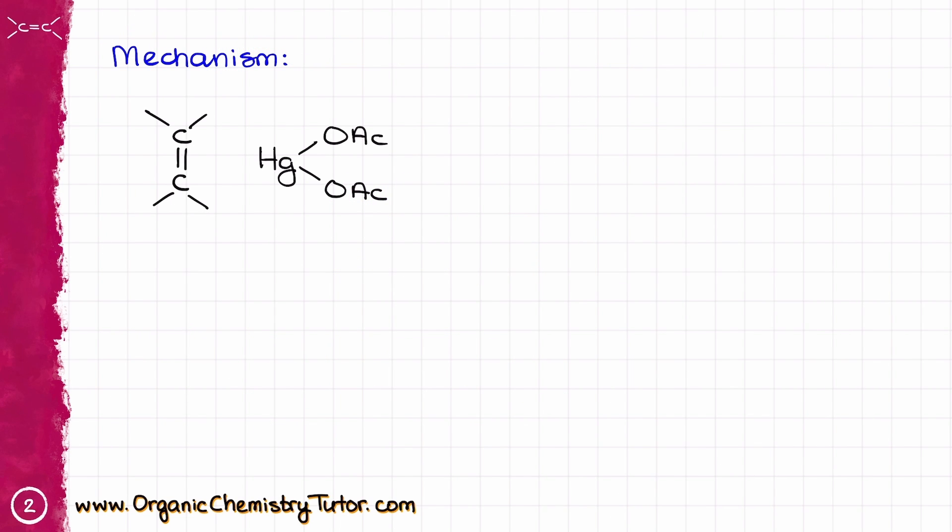As always, we are going to start with a simplified mechanism of this reaction. This reaction consists of two distinct phases. In the first phase, we are going to react our alkene with mercury. This step is very similar mechanistically to the halogenation of the alkene step.